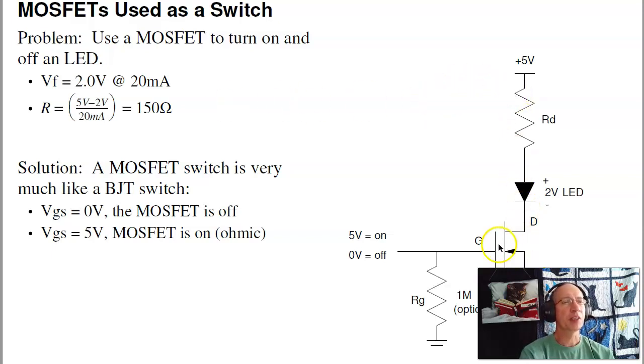In that case, I'm going to use the MOSFET as a switch, where this either turns on or off. When this is 0 volts, it's off. When it's 5 volts, I want 150 ohms between the power supply and ground.